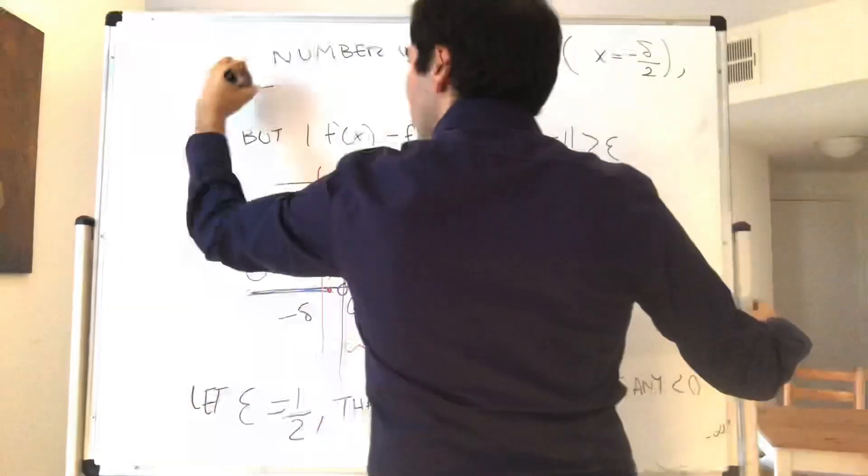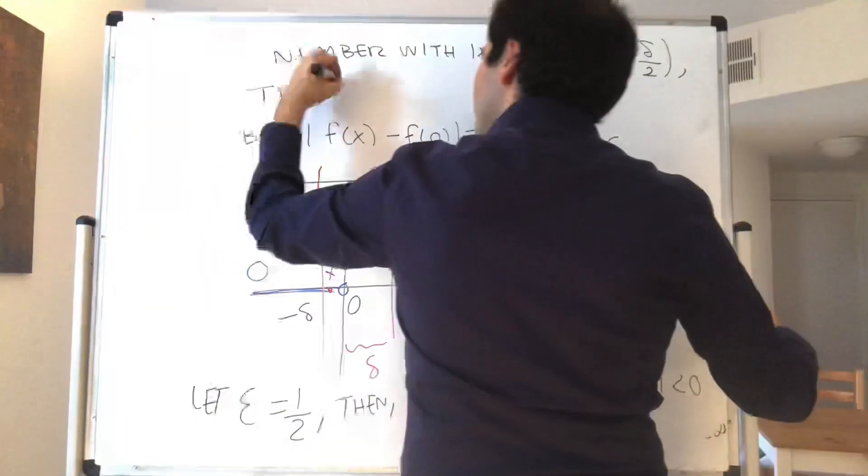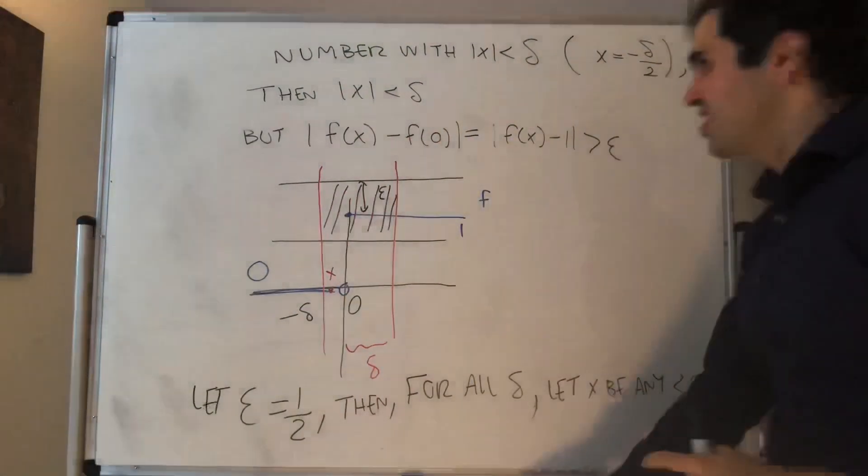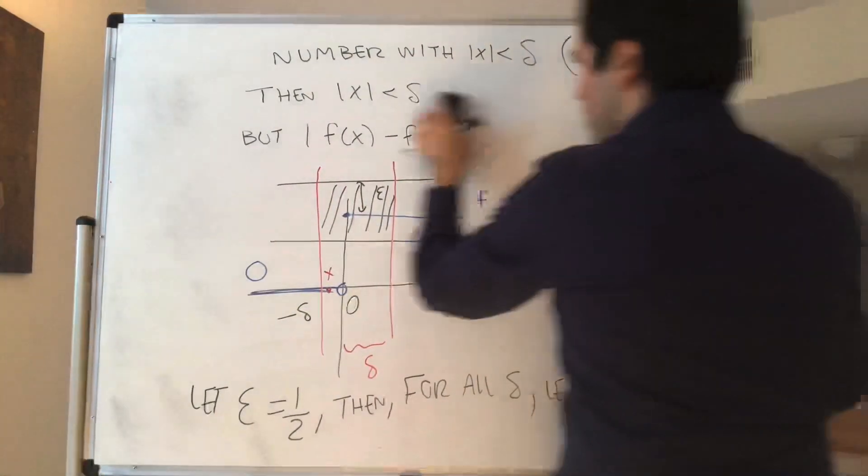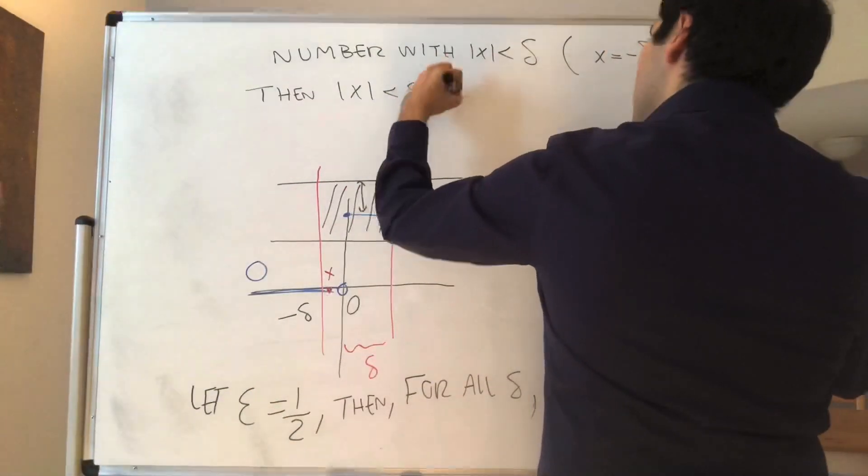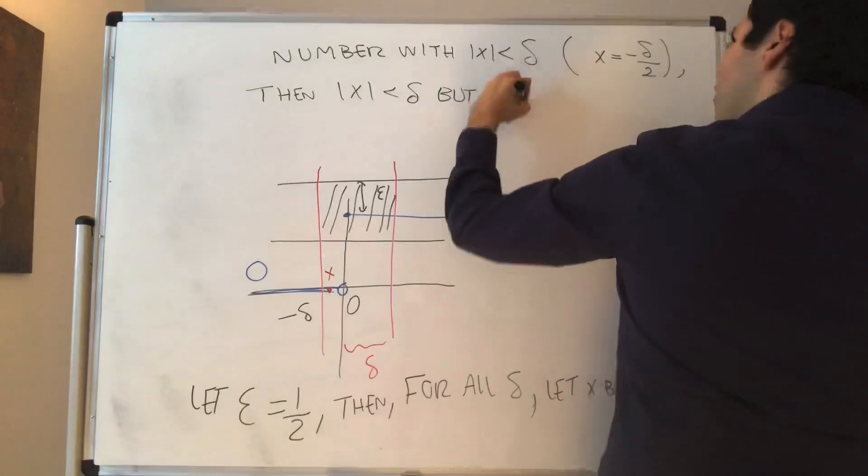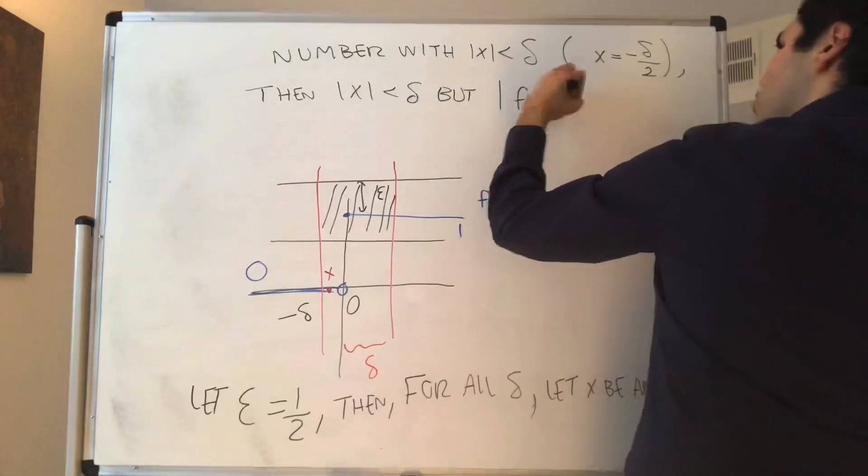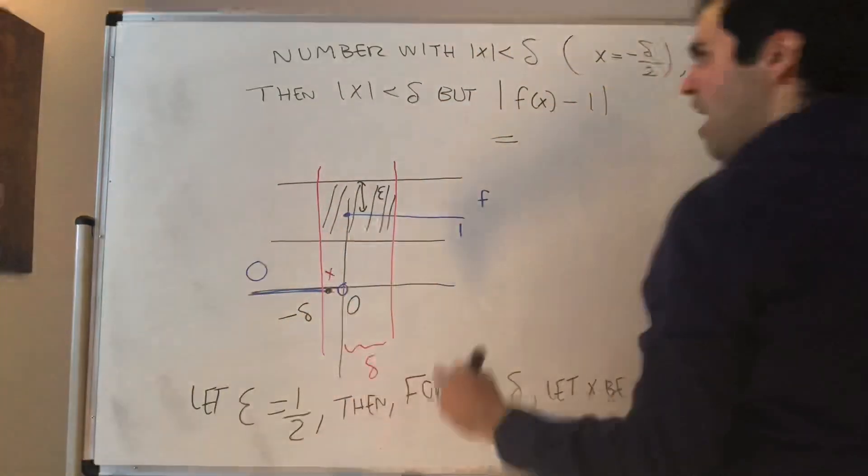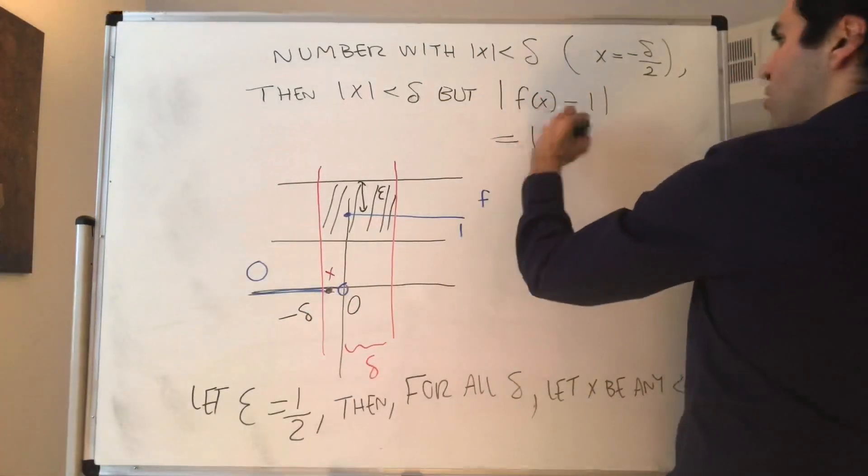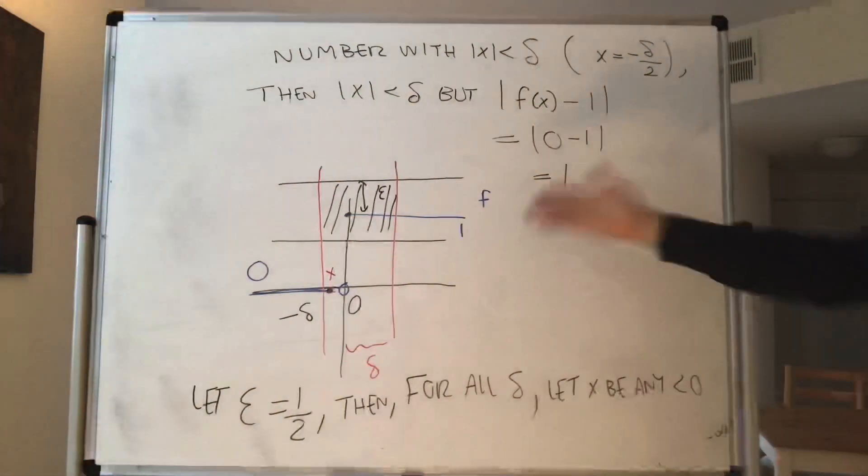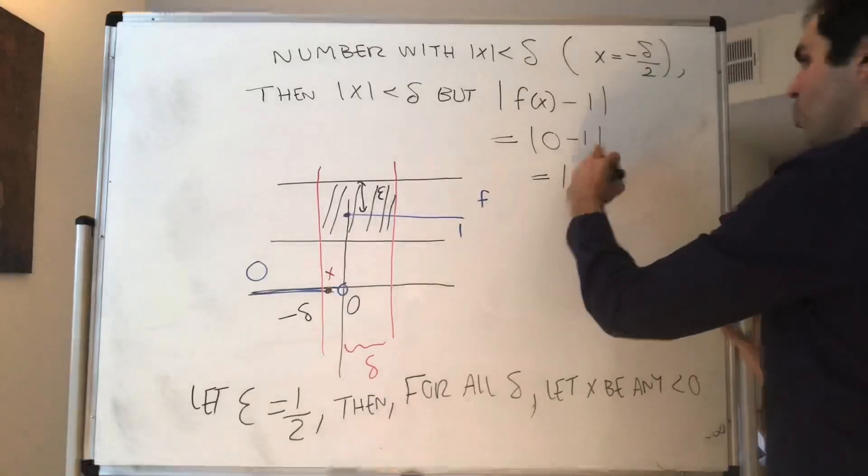And then what do we have? Well, of course, absolute value of x is less than delta, just by construction. But what is f of x minus f of 0, minus 1? Well, remember, x is negative, so f of x, by definition, is 0. So it's 0 minus 1, which is 1, and it's definitely greater than or equal to 1 half.